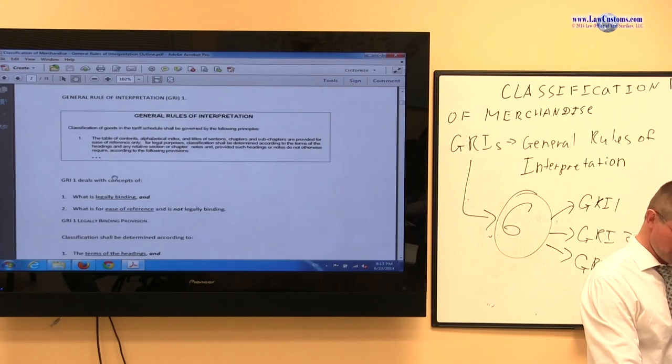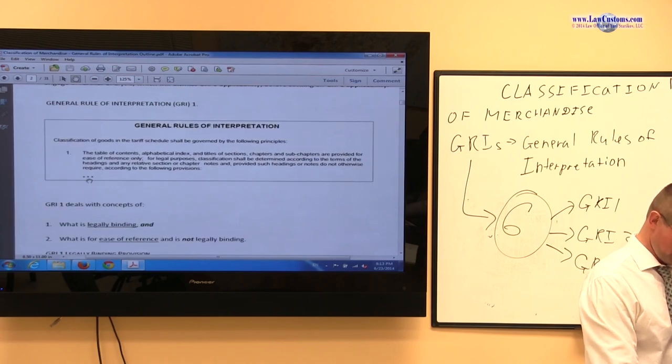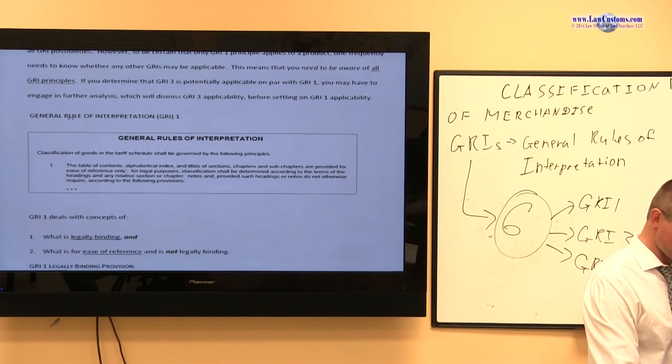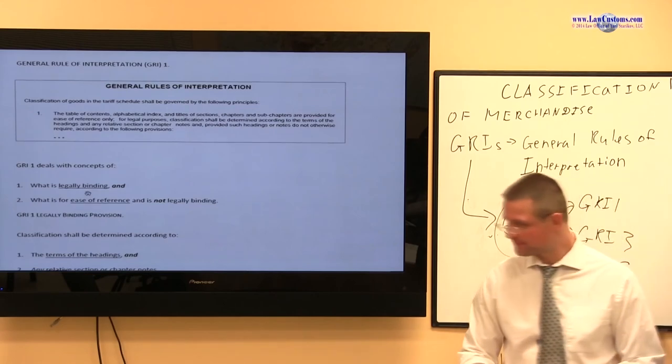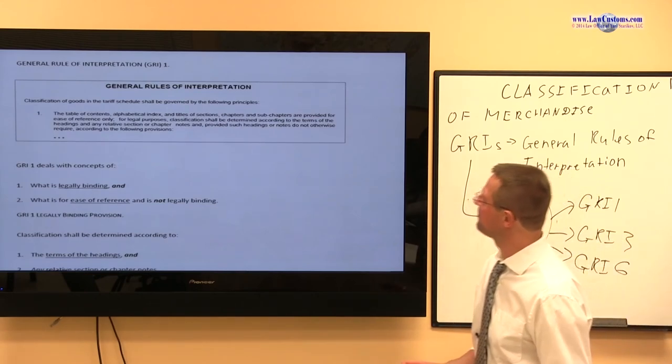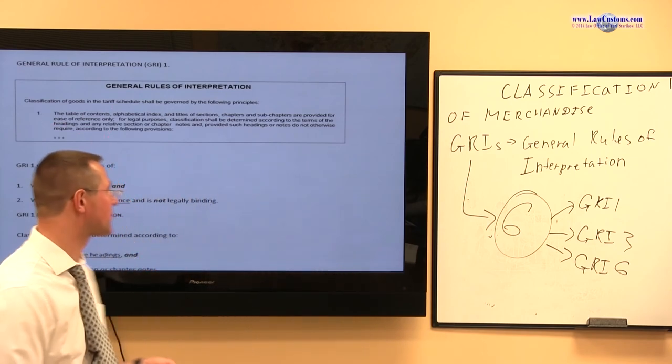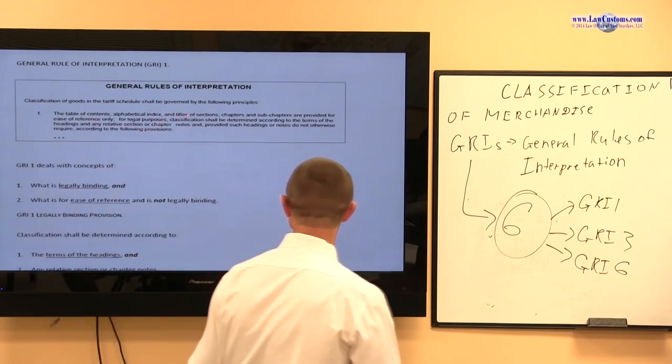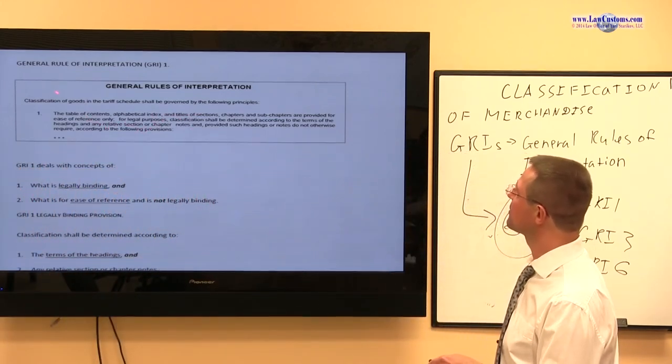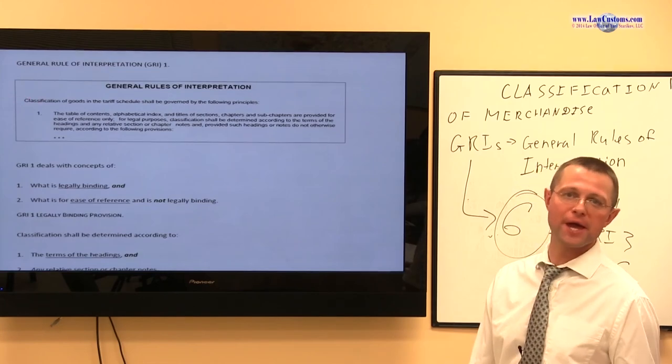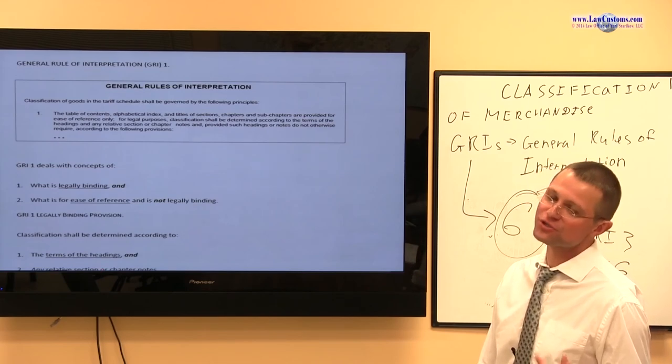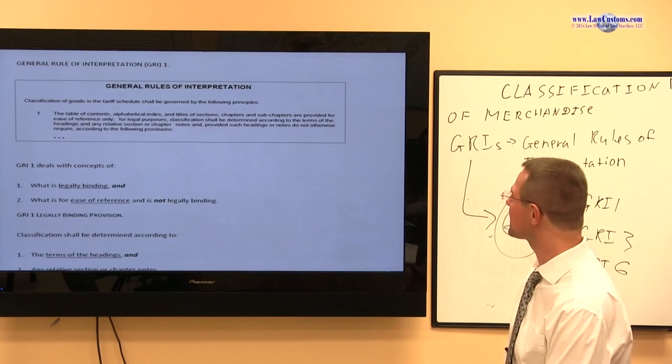So let's start with reading the first rule and trying to make sense of it. GRI-1 says, classification of goods in the tariff schedule shall be governed by the following principles. So this first sentence really is a preamble. It will list those principles that are given in GRI-1, GRI-2, GRI-3, GRI-4, GRI-5, GRI-6.